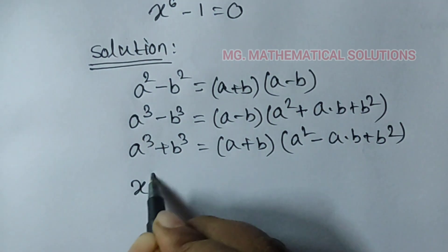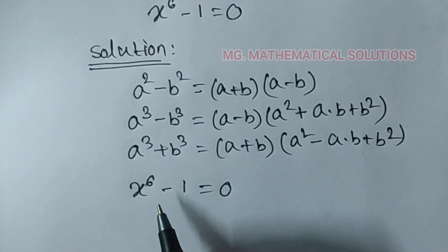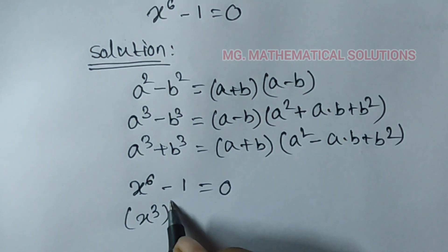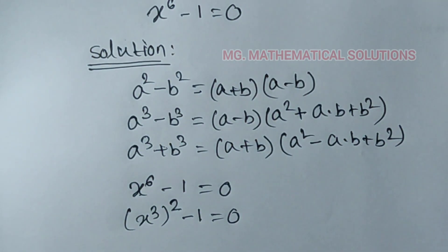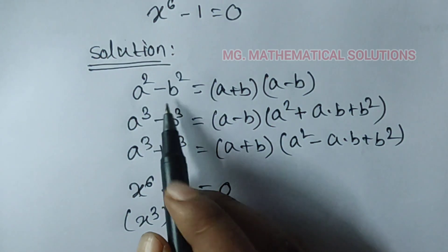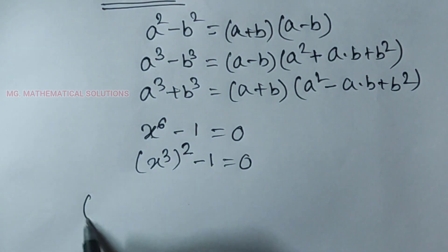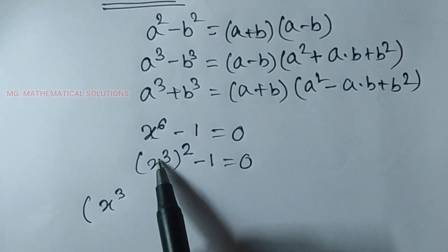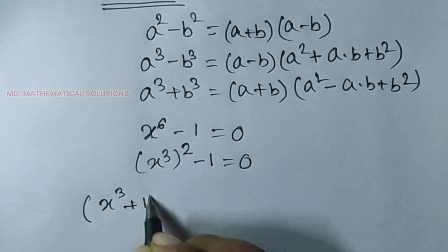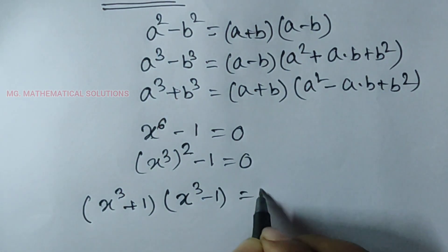The equation is x to the power 6 minus 1 equal to 0. We can also write x to the power 6 as (x³)² minus 1 equal to 0. Now, this term looks like the difference of squares formula, so we use a² - b² with a equal to x³ and b equal to 1. So: (x³ + 1)(x³ - 1) equal to 0.